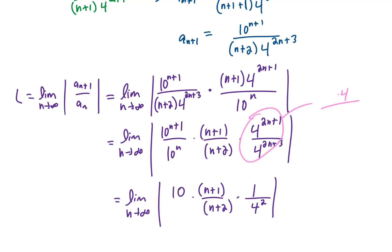You could rewrite 4^(2n+1) as 4^(2n) times 4. And 4^(2n+3) you could rewrite as 4^(2n) times 4^3. Then you'll notice that the 4^(2n)'s cancel.